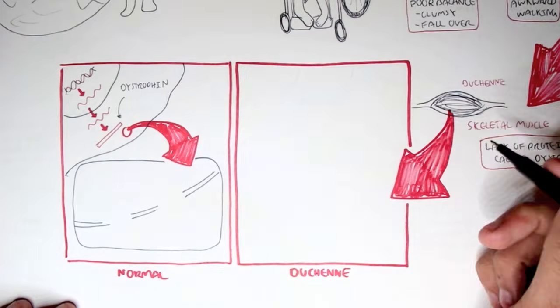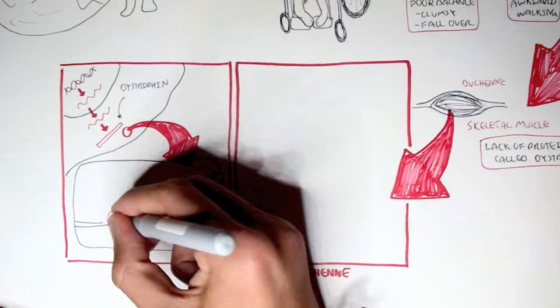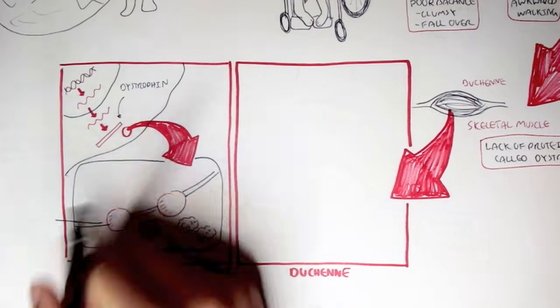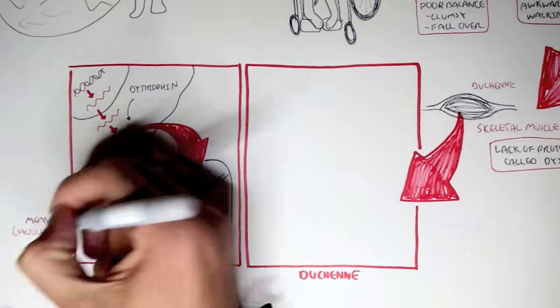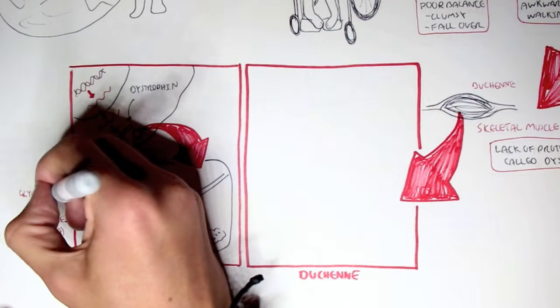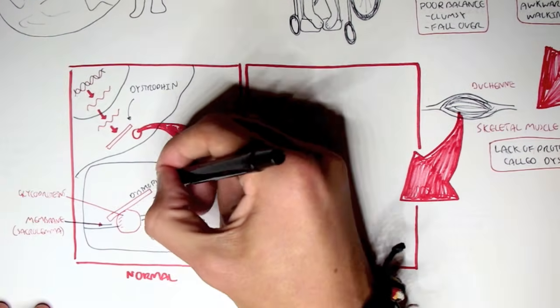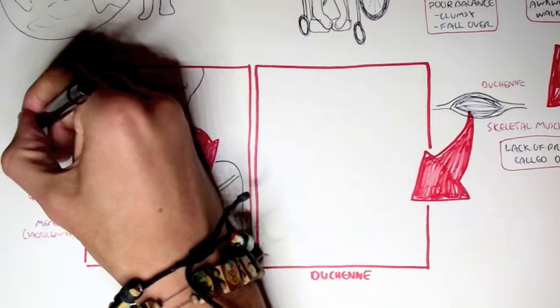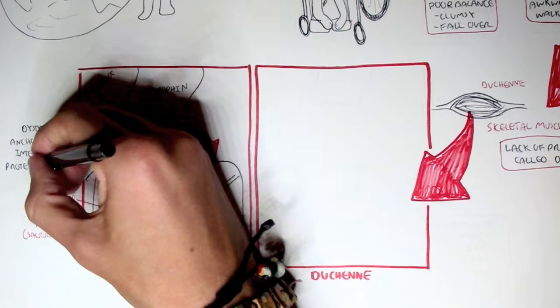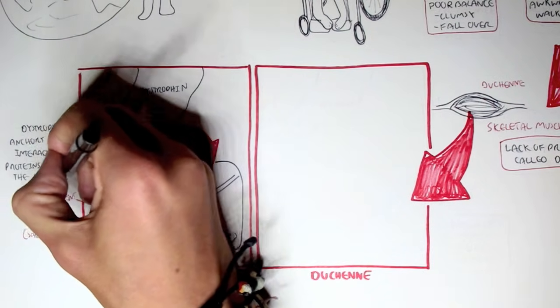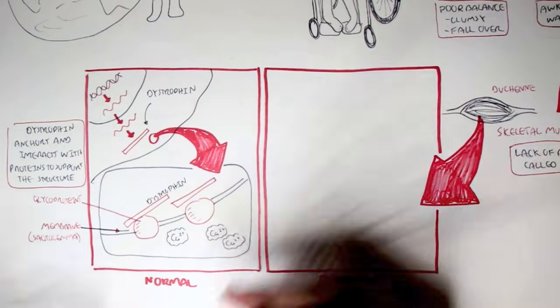So, here we have the cell membrane. Here, outside the cell membrane, we have a lot of calcium, and we have also proteins in the cell membrane. So, here is a membrane, also called a sarcolemma. And here are some proteins, also known as glycoproteins, which connects with the outside. Now, dystrophin, essentially what it does, is it anchors and interacts with these proteins to support the whole membrane structure and the connection between the inside of the cell to the outside. And that was for normal skeletal muscle.